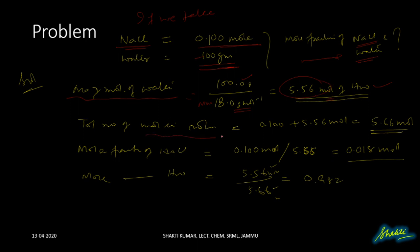The total number of moles in the solution — moles of NaCl plus moles of water — is equal to 5.66 moles. Now, the mole fraction of NaCl: we write the given moles of NaCl, that is 0.100 moles, divided by the total number of moles, 5.66 moles. The result is 0.018.